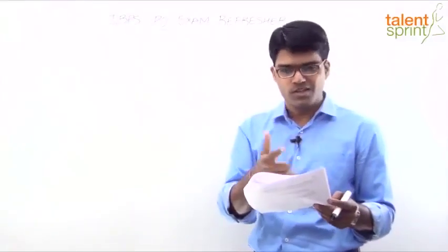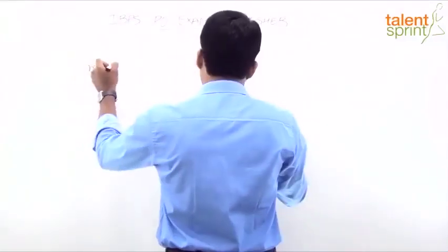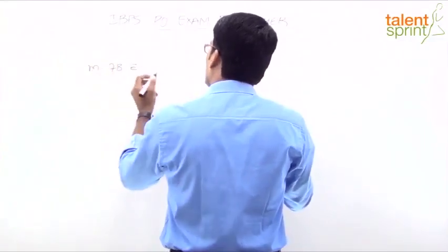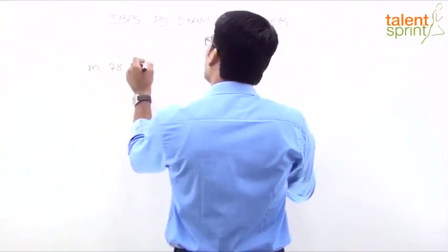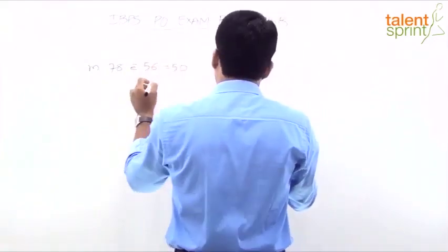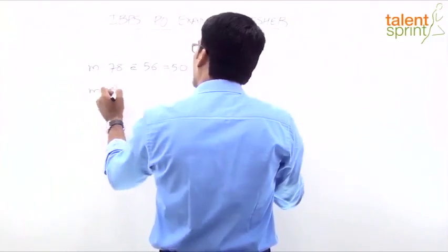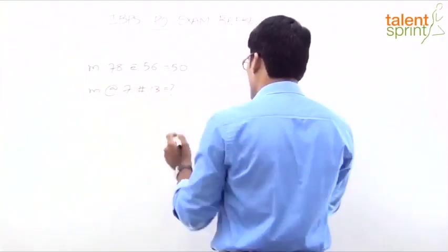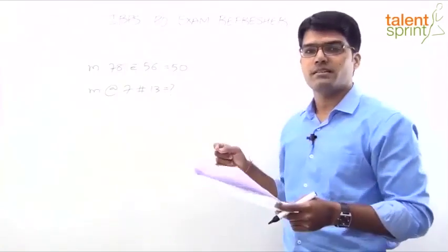I will take only question 41. The remaining questions you can solve by yourself. It says m dot 78, what is that? Epsilon. No, this is not epsilon. Whatever it is. E with a bar on top, 56 equals to 15. m at the rate 7 hash 13 is equal to what? You have to find out what comes in place of question mark.